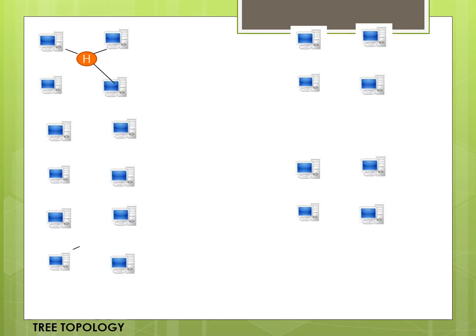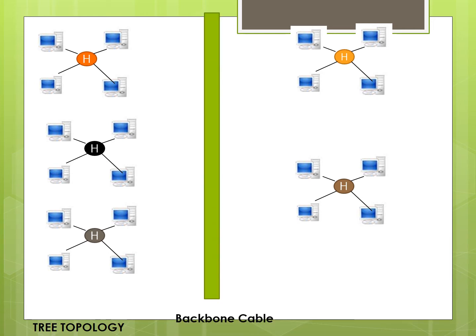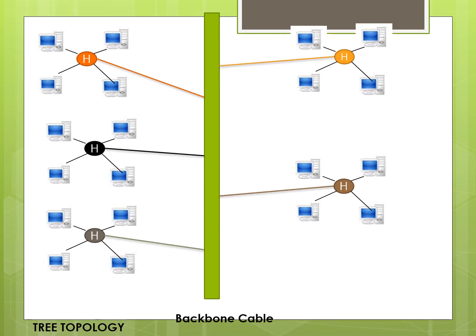The hub is a connectivity device which interconnects all four computers. In tree topology, the hub connected to the computers forms the secondary hub. All the secondary hubs will be connected to a common cable — this is the primary hub. You can see here how the connection has been done in tree topology.